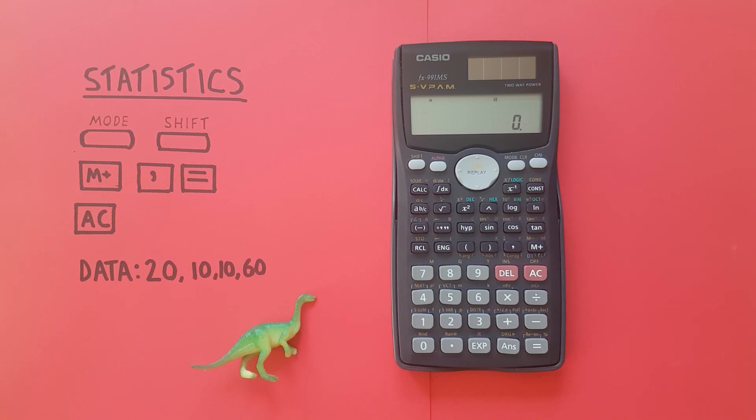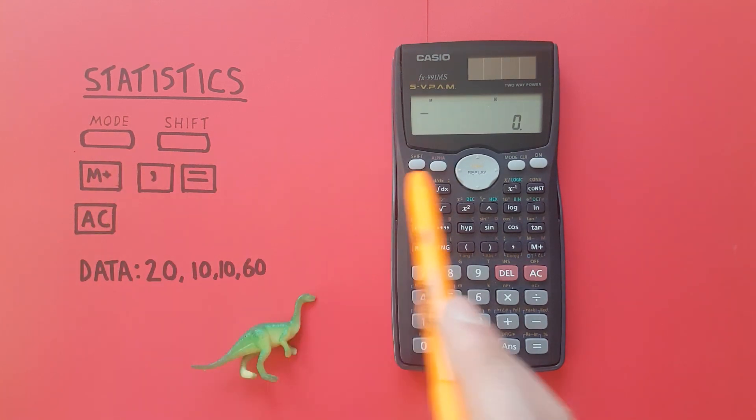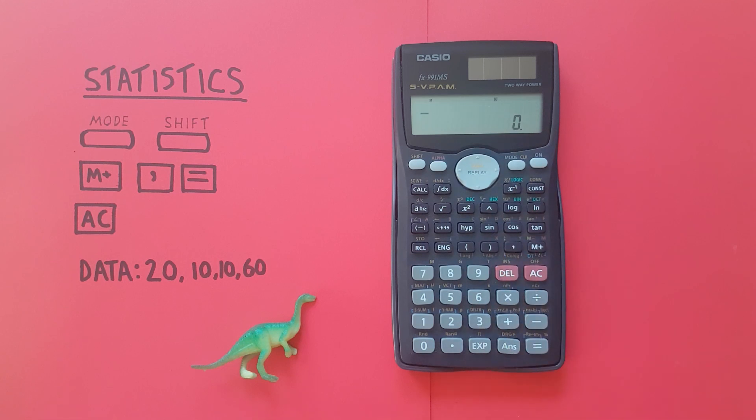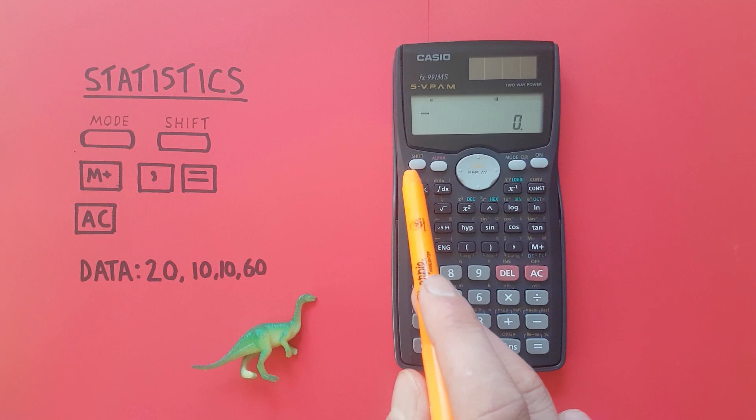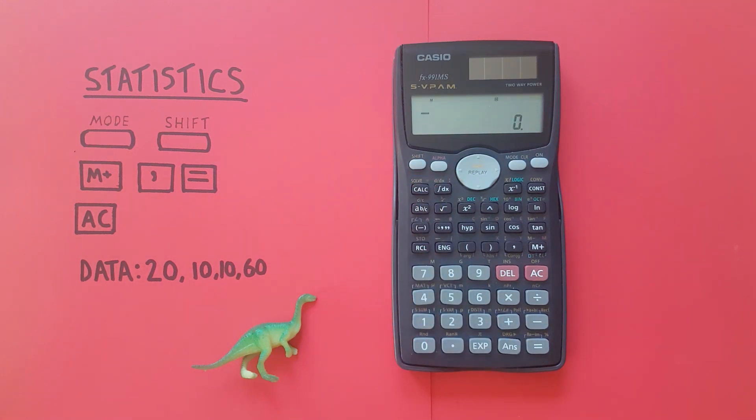To do this we'll be using the mode key that looks like this and is located here, the shift key that looks like this and is located here in the top left corner, and the M plus key that's located here.